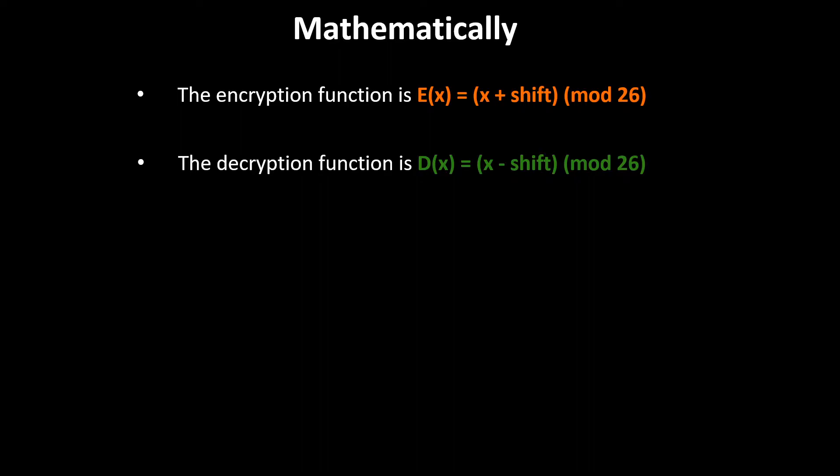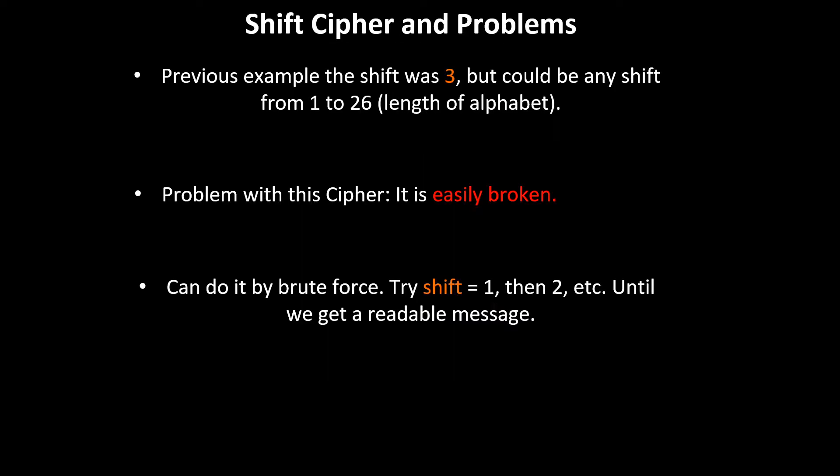As we saw in the previous example, the shift was three, but we could just as easily imagine any shift from one to 26—the length of our alphabet. For example, we can use a shift of four, five, etc. The problem with this cipher, however, is that it is very easily broken.